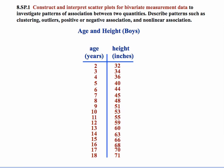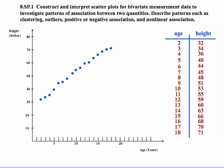The focus of this standard is to construct and interpret scatter plots for bivariate measurement data. As an example, we tracked the growth of a boy from age 2 to age 18. Plotting the data shows a clear positive association because as age increased, so did height. The relationship is pretty linear — on average, this student grew roughly 2 to 4 inches per year.